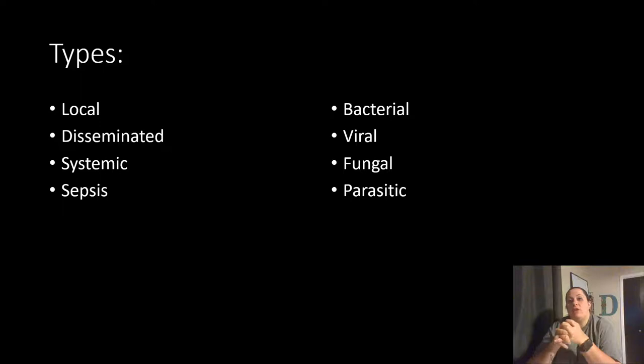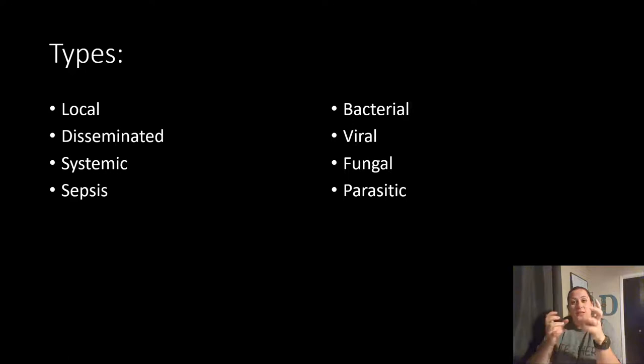Parasitic infections include parasites like with malaria — those are protists — amoebas like with amoebic dysentery, and worm infections like tapeworms. Those are all considered parasitic types of infections.